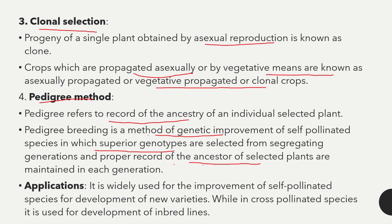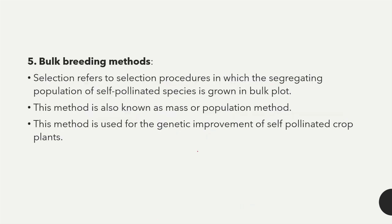The pedigree method is widely used for the improvement of self-pollinated species for the development of new varieties, while in cross-pollinated species it is used for the development of inbred lines. The next method is bulk breeding — also known as mass or population method.